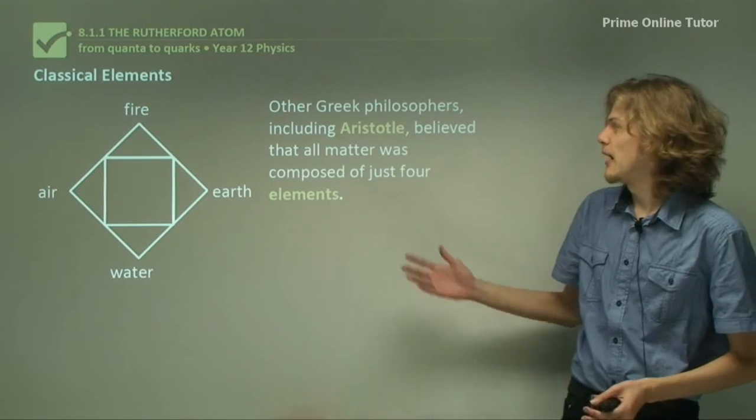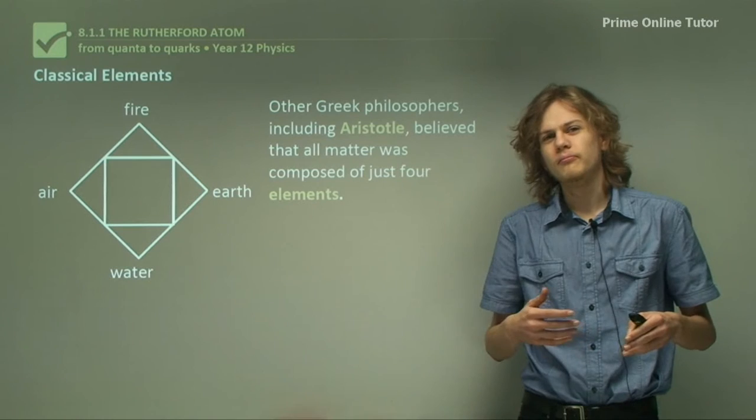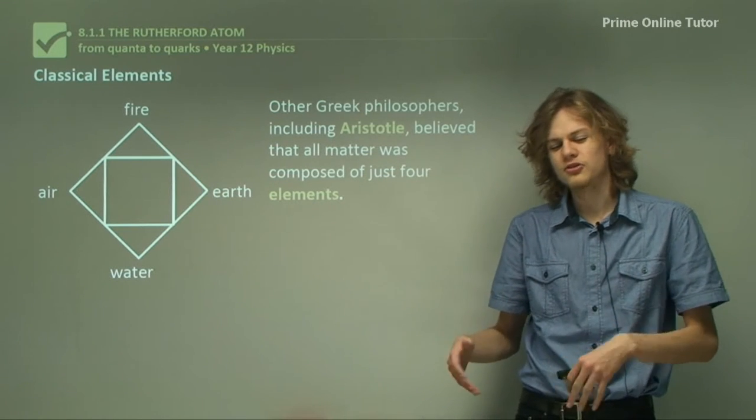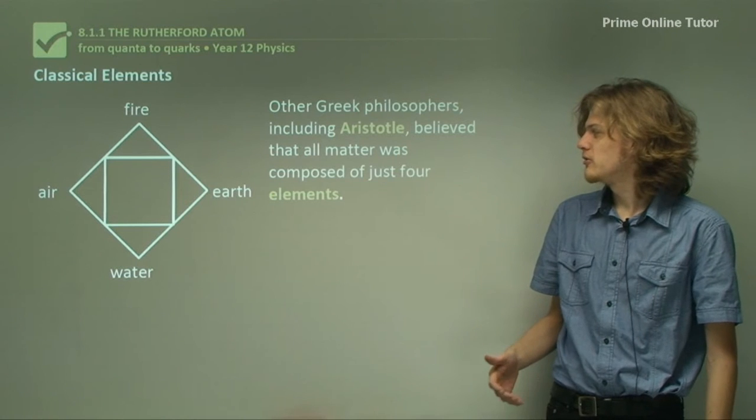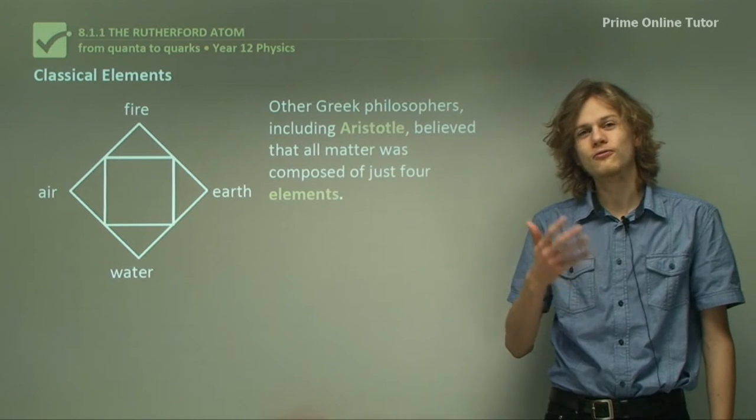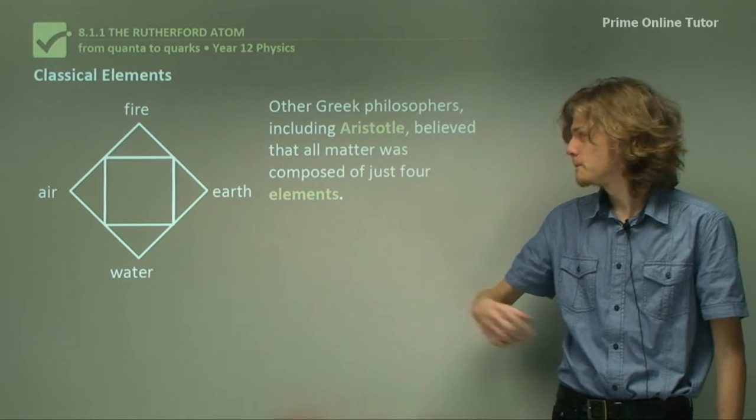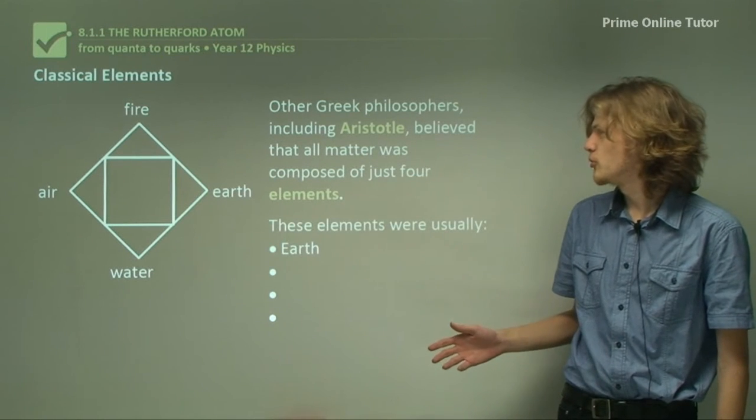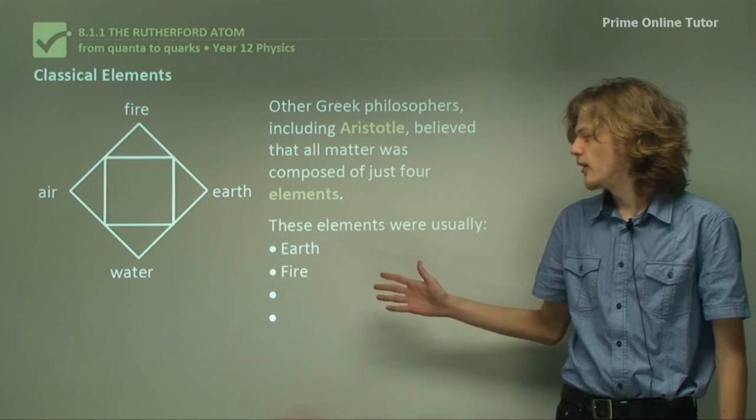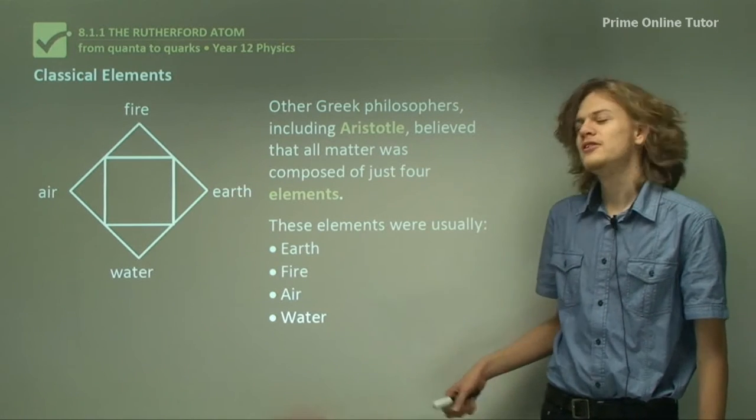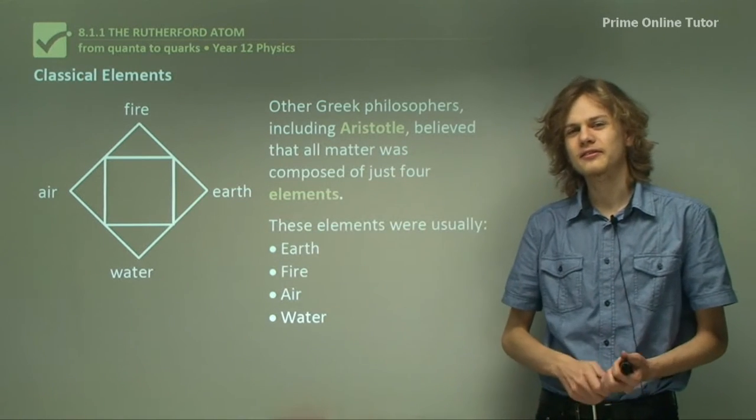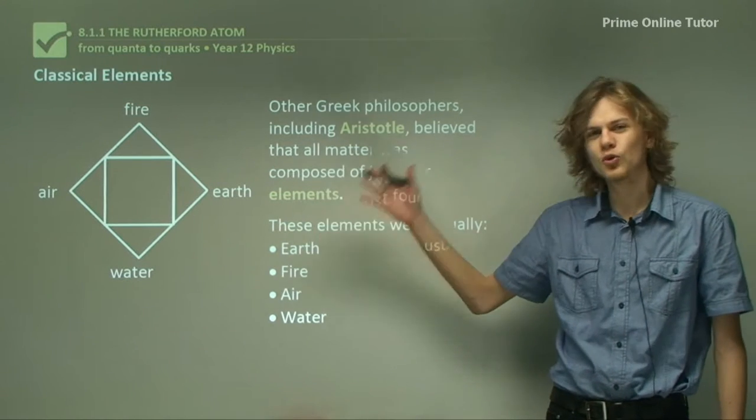Other Greek philosophers like Aristotle said no, that can't be right because it doesn't really fit too well with our model. And they supposed that all matter consisted of four different elements which we can see over here. And so these elements were usually earth, fire, air, and water.